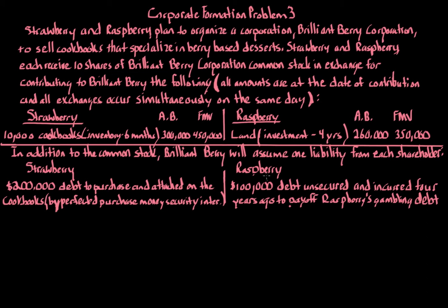The debt that Raspberry owes — which Brilliant Berry will assume — is a $100,000 debt, which is unsecured. There's no property attached to it, and it was incurred four years ago to pay off Raspberry's gambling debt. So Raspberry got into some rough times, was gambling, took out a loan, and still owes this $100,000 to a bank.